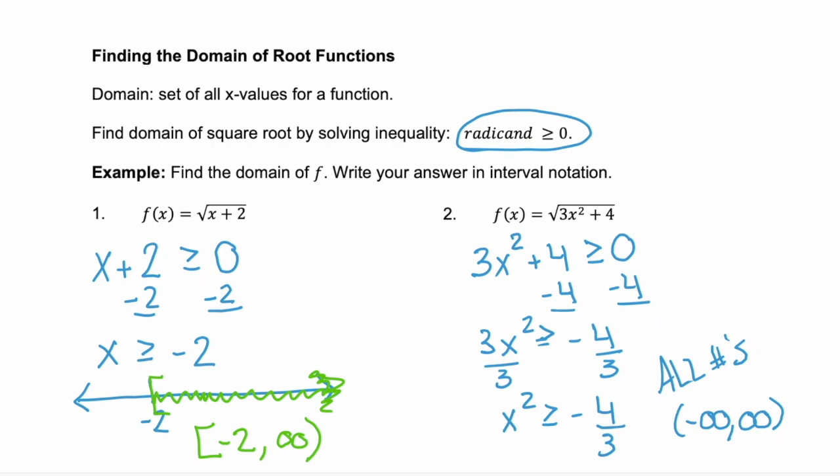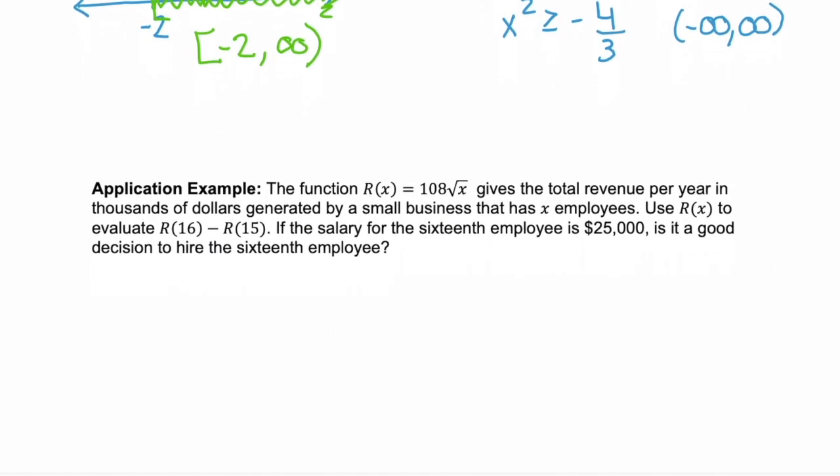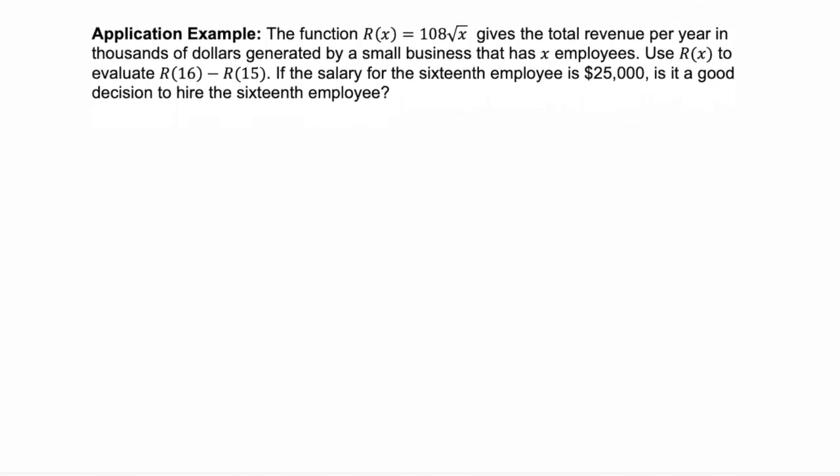Now let's look at an application problem that involves radical functions. The function r of x equals 108 times the square root of x gives the total revenue per year in thousands of dollars generated by a small business that has x employees. Use r of x to evaluate r of 16 minus r of 15. If the salary for the 16th employee is $25,000, is it a good decision to hire the 16th employee?